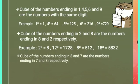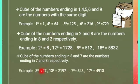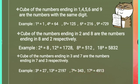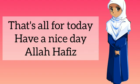The cubes of numbers ending in 3 and 7 end in 7 and 3 respectively — they also swap. For example, 3³ = 27 (ends in 7), 13³ = 2197 (ends in 7), 7³ = 343 (ends in 3), and 17³ = 4913 (ends in 3). So cube of numbers ending in 3 ends in 7, and cube of numbers ending in 7 ends in 3. That's all for today — have a nice day!